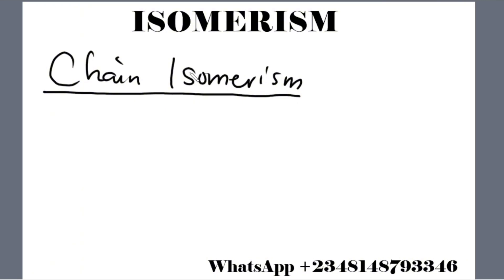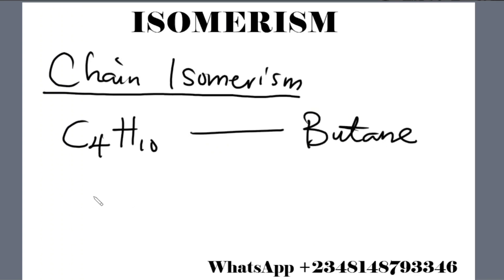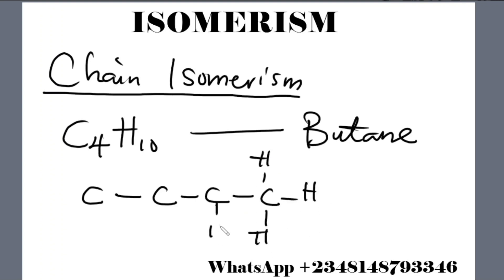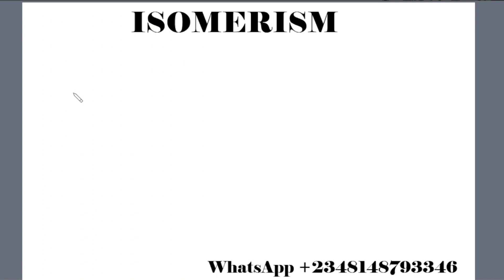Let's take an example. Butane has the molecular formula C4H10, with 10 hydrogen atoms. The chain isomer for butane is called 2-methylpropane.